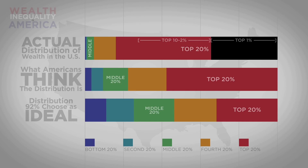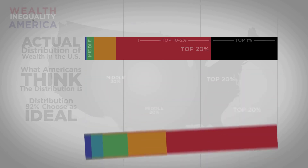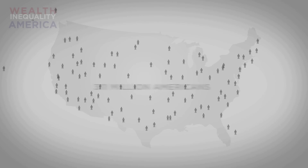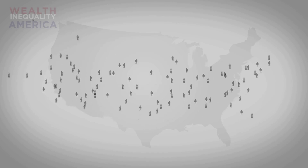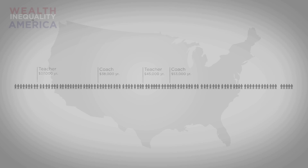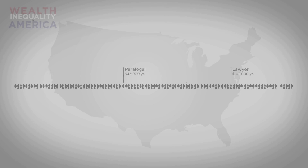Let's look at it another way, because this chart is difficult to wrap my head around. Instead, let's reduce the 311 million Americans to just a representative 100 people. Here they are: teachers, coaches, firefighters, construction workers, engineers, doctors, lawyers, some investment bankers, a CEO, maybe a celebrity or two.